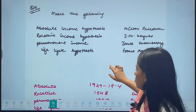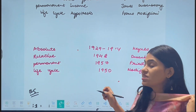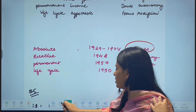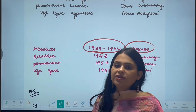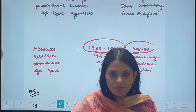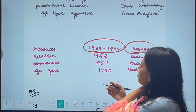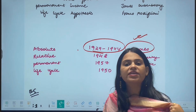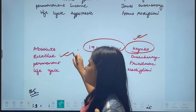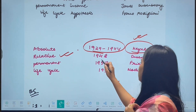The absolute income hypothesis was given by Keynes, introduced between 1929 and 1944. We know Keynes talked about his general theory and general equilibrium model around 1938. So absolute income hypothesis was the first hypothesis to come in. The second hypothesis is the relative income hypothesis, given by Duesenberry, which came in 1948.